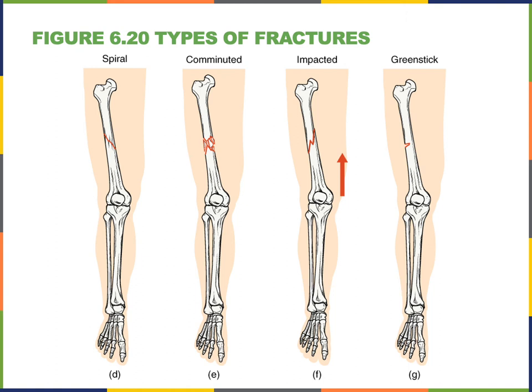An impacted fracture, also known as a compression fracture, is when one bone fragment is driven into the other by a strong compression force. A greenstick fracture is a partial fracture in which only one side of the bone is broken. Greenstick fractures are more common during adolescence because the bones are more flexible, with a relatively higher amount of collagen and lower concentration of hydroxyapatite, making the bones less brittle and more flexible.